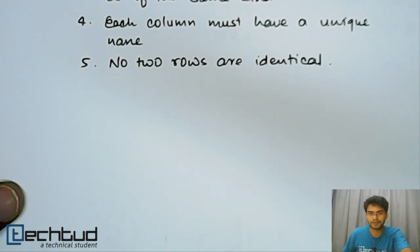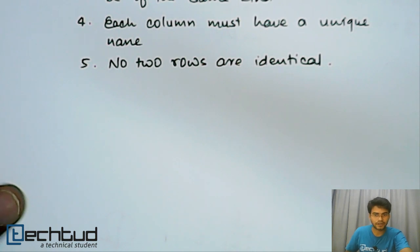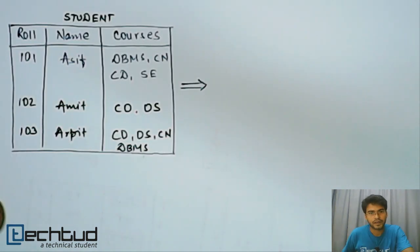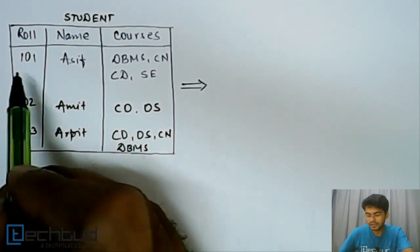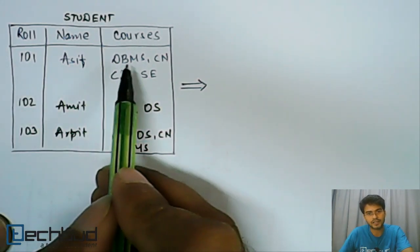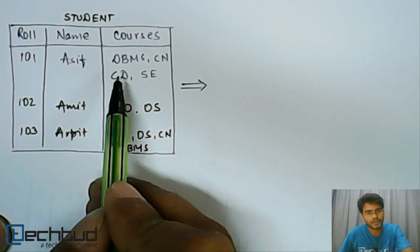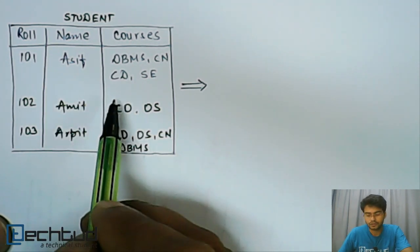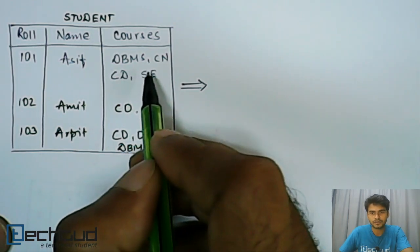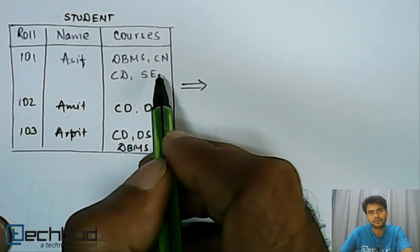So let's first take two examples of relationship and try to identify which one is satisfying all the criteria and is in first normal form. Here we have a student table, database of student in which we are studying the name of student and the courses opted by the student. If you can see this roll number of this student is 101, name is Asif and these are the courses he has opted. There are other entries also but if you see here in courses, there are many courses. The values are not atomic here.